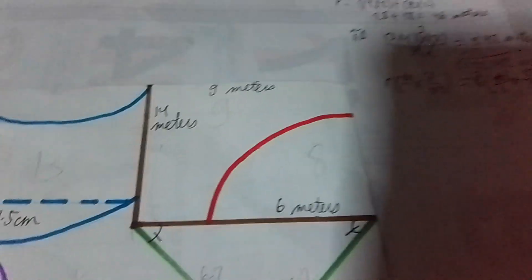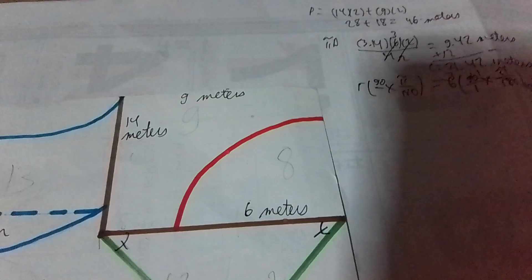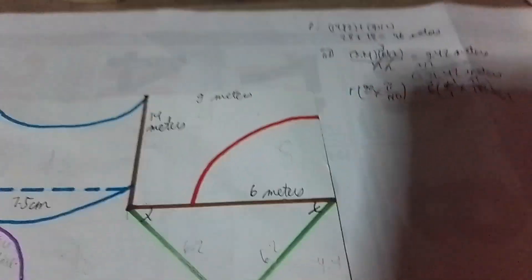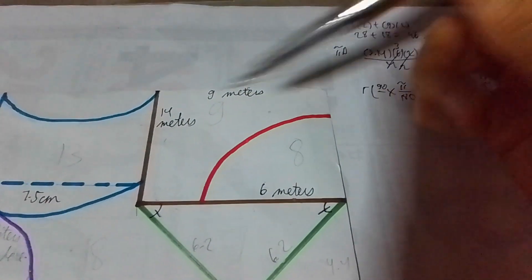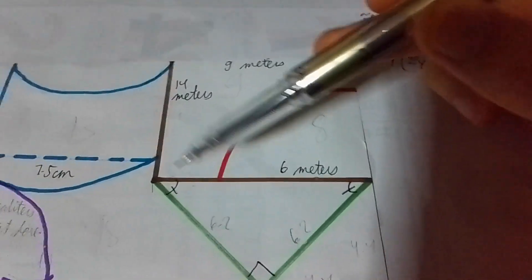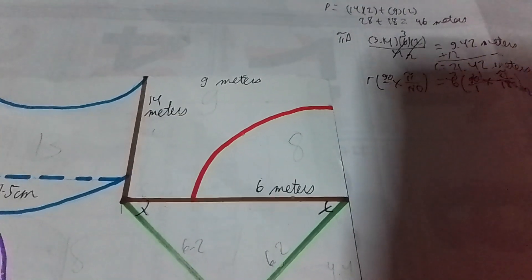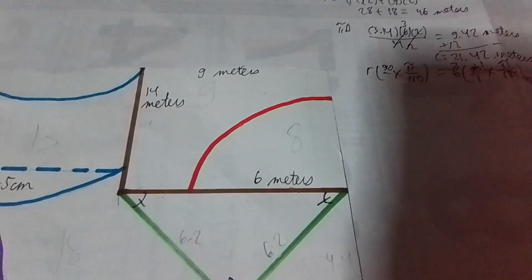That's the circumference of the one-fourth of a circle if it's just individualized. But we are doing this figure all together. We want to get this entire thing.